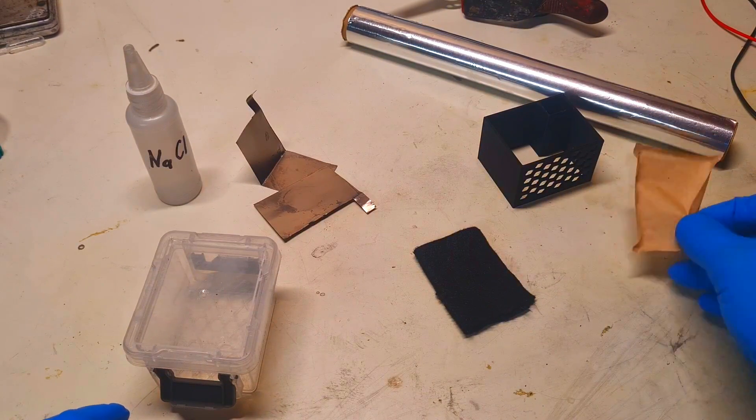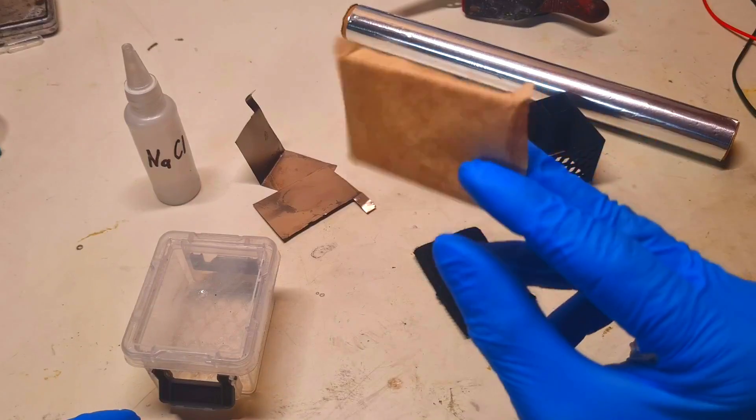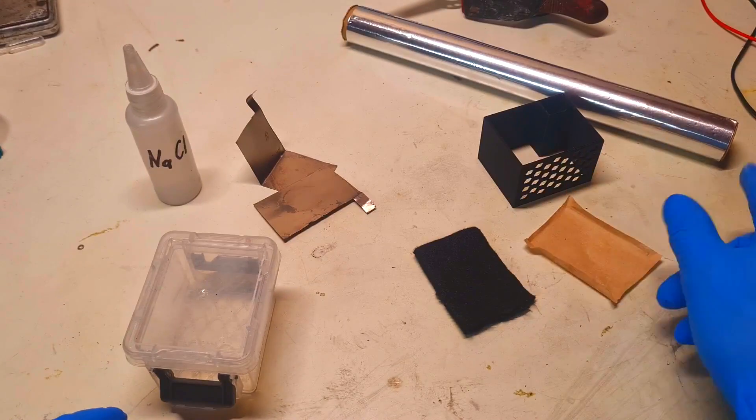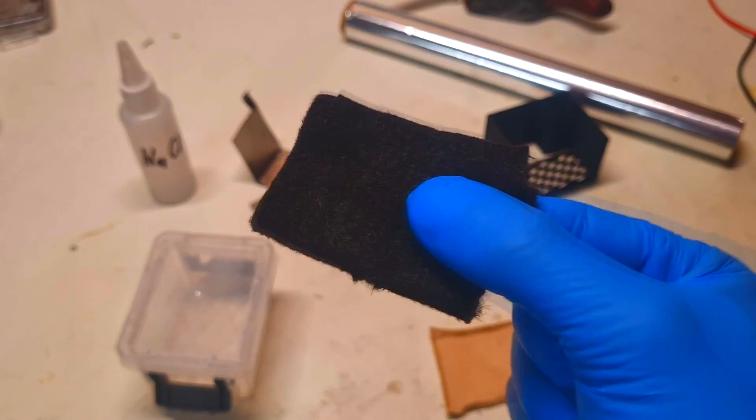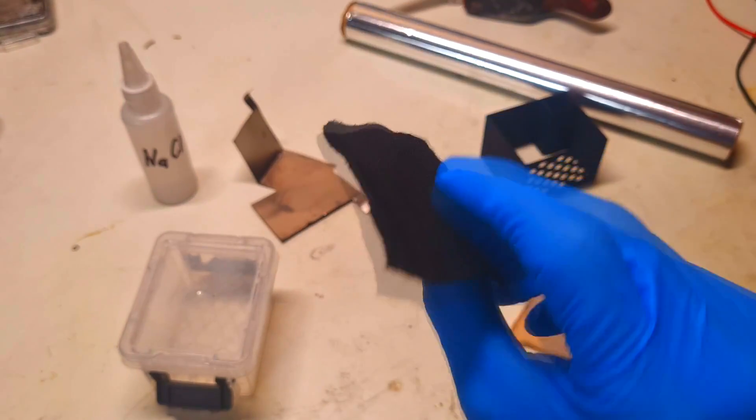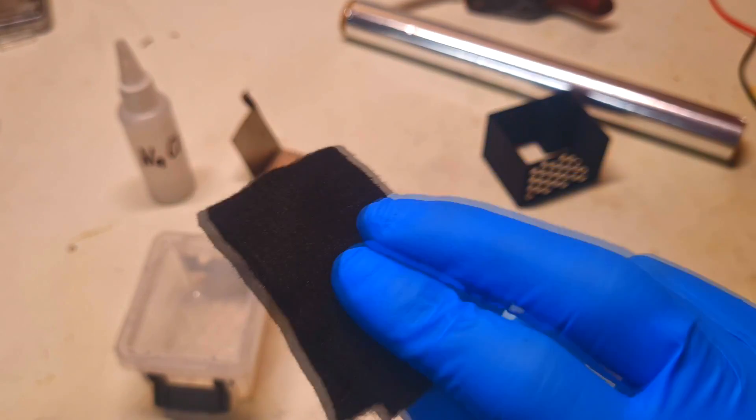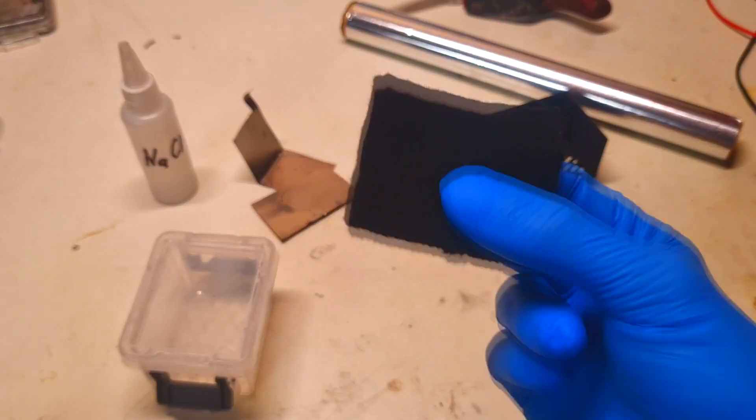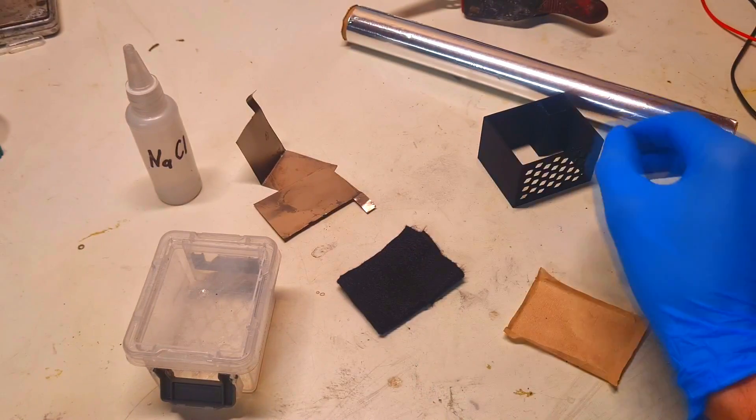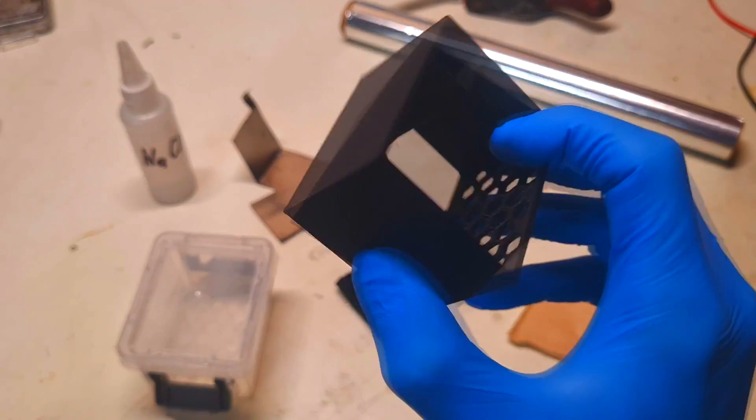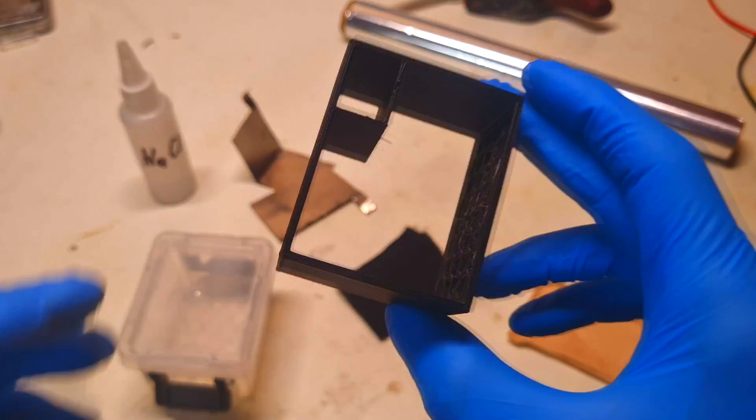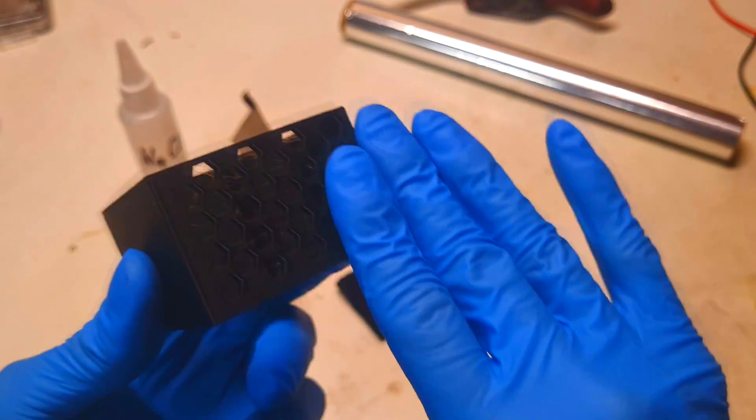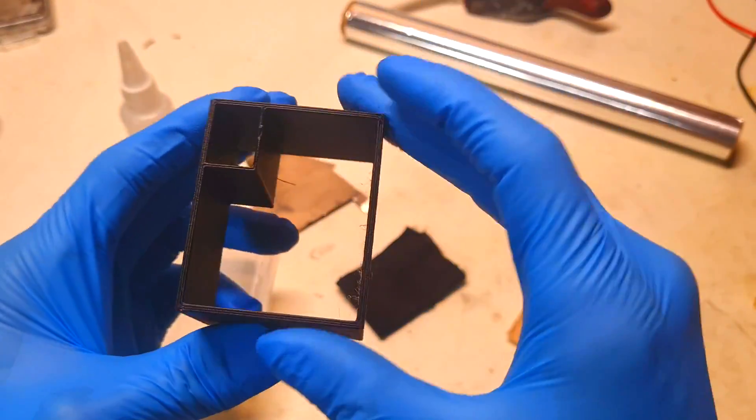Then we have the separator made from filter paper, the positive active material which is activated carbon felt (you can also use activated carbon powder), and a 3D printed plastic spacer that will separate the positive and negative electrode.